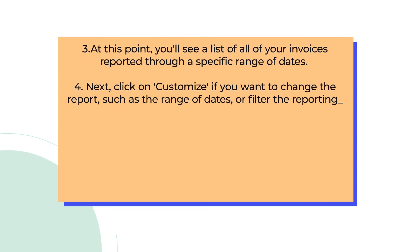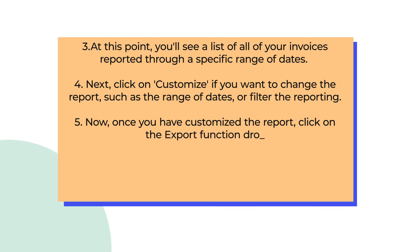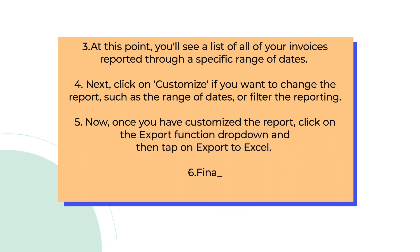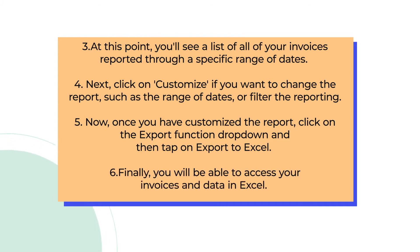Next, click on Customize if you want to change the report such as range of dates or filter the reporting. Now, once you have customized the report, click on the Export function drop-down and then tap on Export to Excel. Finally, you will be able to access your invoices and data in Excel.